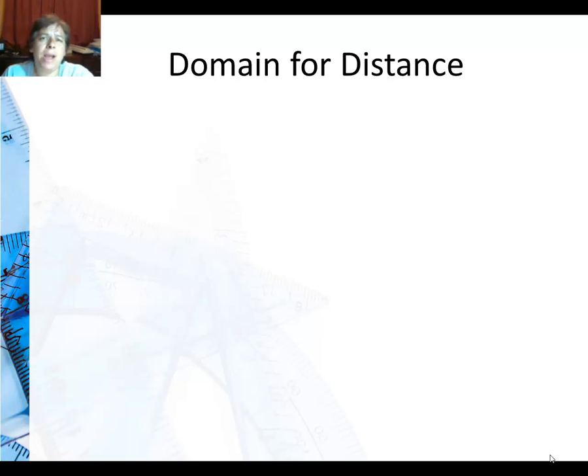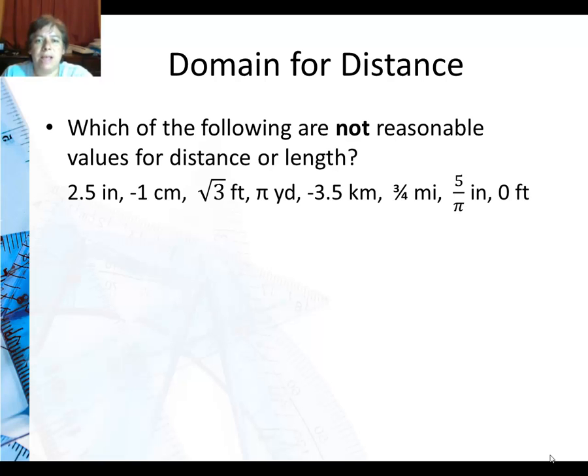So one thing before I finalize my formula. The domain for distance, how do I get that? So which of the following are not reasonable values for distance or length? Is 2.5 inches reasonable? Sure. How about negative 1 centimeters? We never really talk about negative distances in real life. So no that's not a reasonable distance. How about square root of 3 feet? Well that's about 1.7 something and it goes on forever. Sure it's irrational, but it is a real number and it is positive. So that's allowed. How about pi yards? Well that's also positive and rational, so that's allowed.